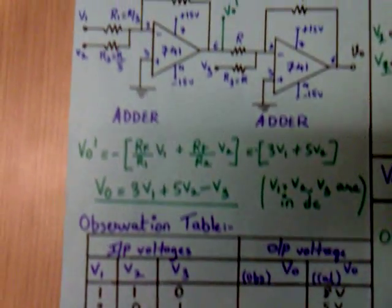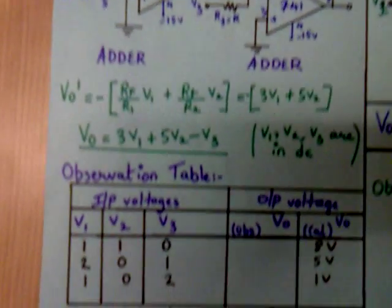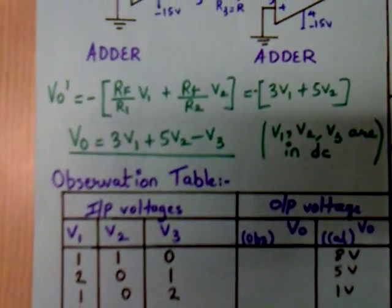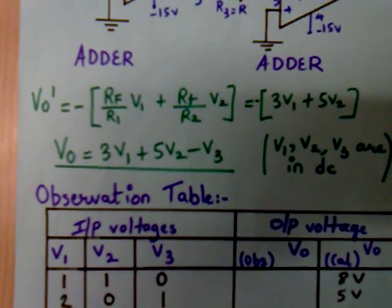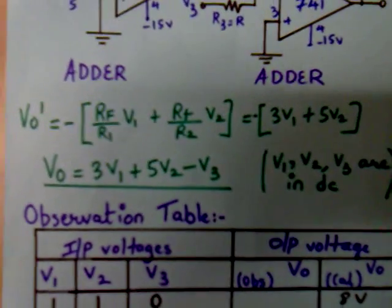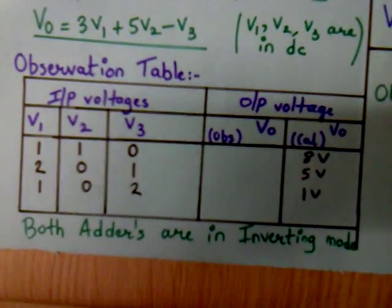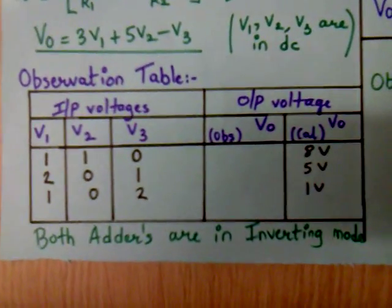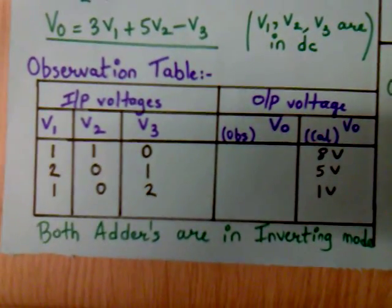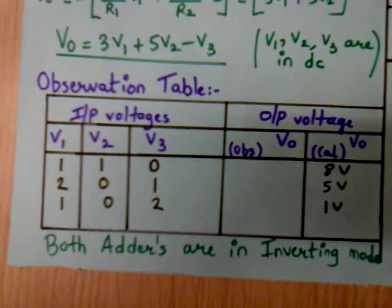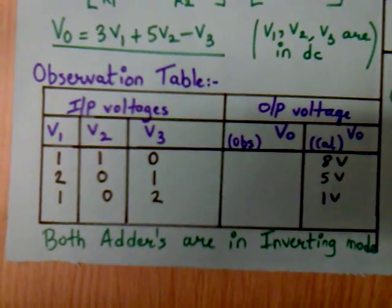Note all the voltages V1, V2, V3 are in DC. The formula used for the inverting adder is as shown. Note down the values for any input combinations V1, V2, and V3, and match the calculated results with the observed values.